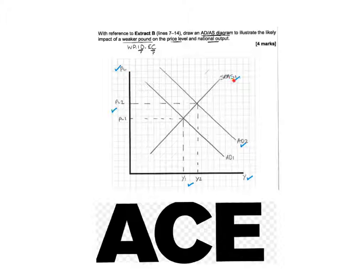For my short run, I've got supply and my AD1. I've got the initial equilibrium marks. I've got the shift. So I've got the correct shift in the curve. So that's got me a mark as well. And I've drawn my equilibrium to show what's happened to the price level and the national output.